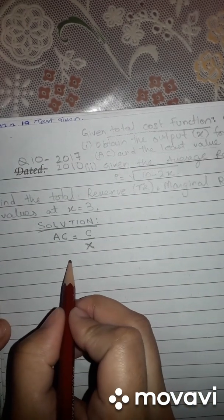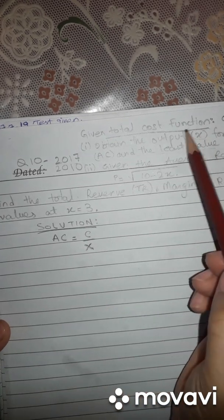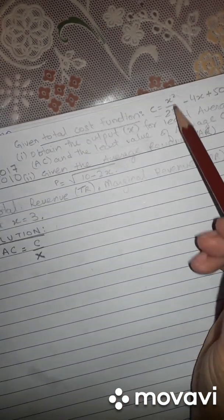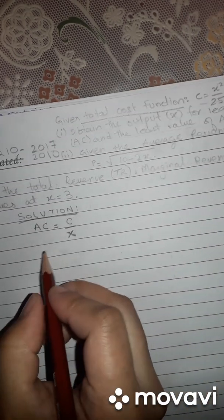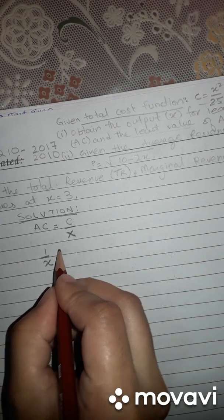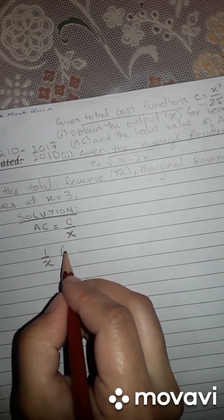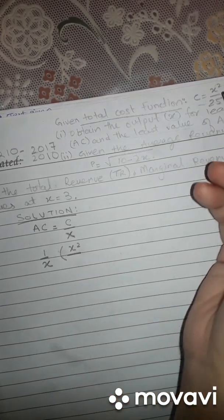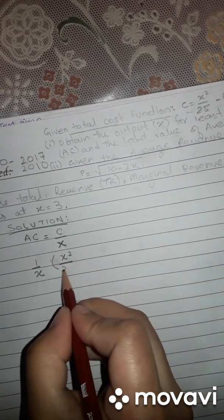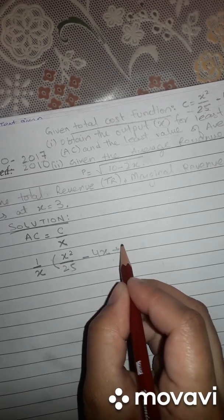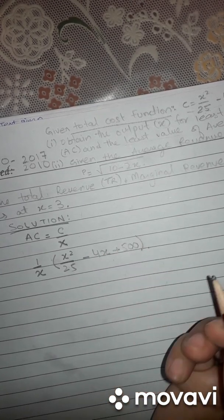Now what we have to do is, this total cost function is given in this form X upon 35. So what we will consider is 1 upon X. Now small bracket, then X squared, then we will write this total cost function as it is over here: 25 minus 4X plus 500, bracket close.